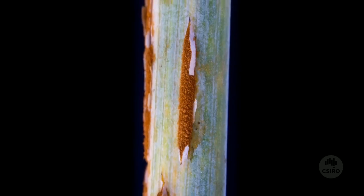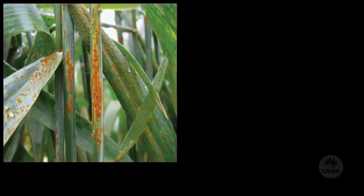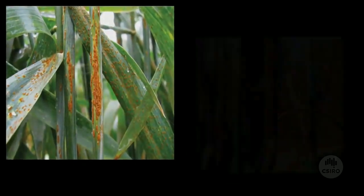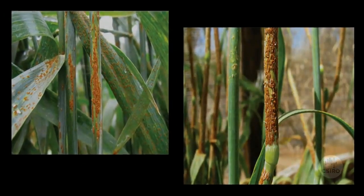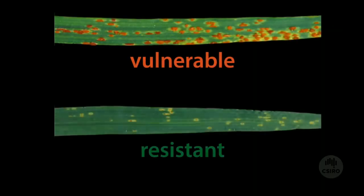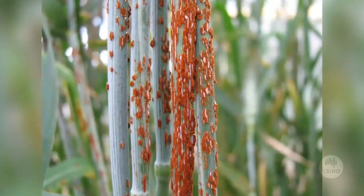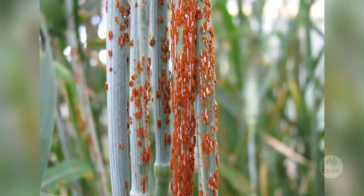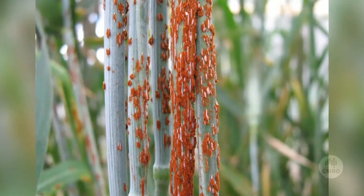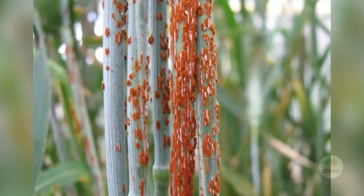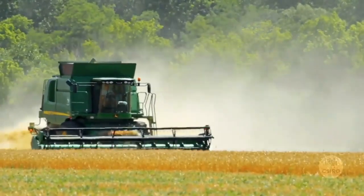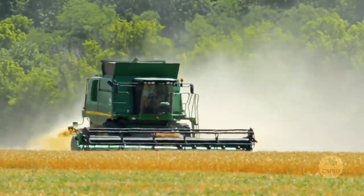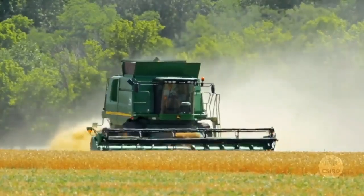New strains of fungi are constantly developing through evolution, which can make some plants vulnerable to infection. Diseases like rust fungus have plagued crop production since people first began farming. Globally, infections of rust destroy 15 million tonnes of wheat each year.